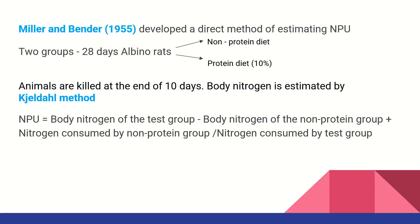You can use the loss of nitrogen — nitrogen is the most important thing to measure. The experiment runs for 28 days with albino rats. NPU is calculated as: body nitrogen of the test group minus body nitrogen of the non-protein group, plus nitrogen consumed by non-protein group, divided by nitrogen consumed by the test group.